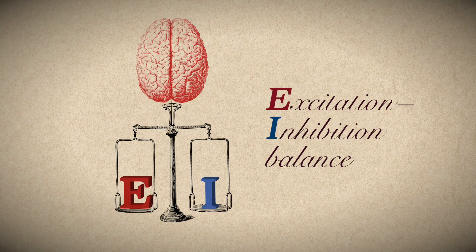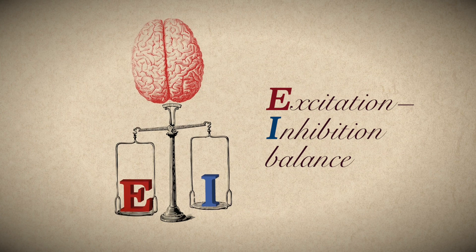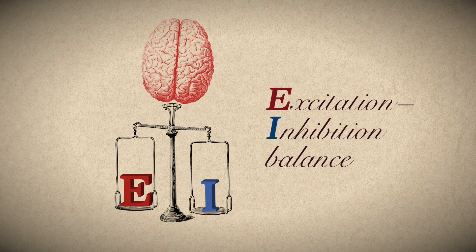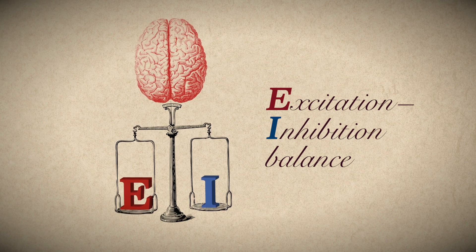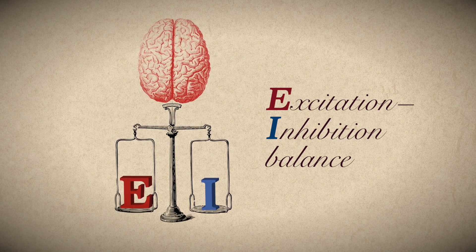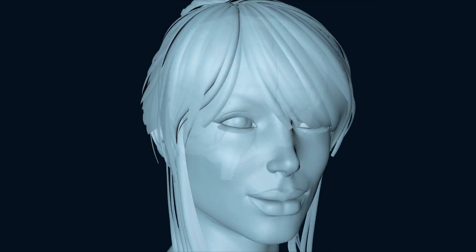The precise balance between excitation and inhibition is critical for healthy brain function. When this balance is disrupted, it is thought to lead to various neuropsychiatric conditions. But in the healthy brain, this balance is actually routinely disrupted during learning and memory formation.